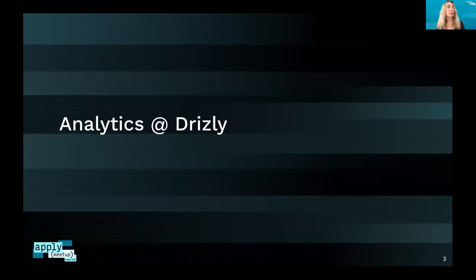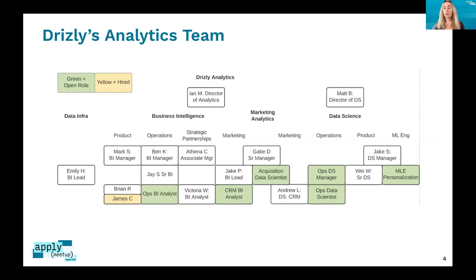Jumping into analytics at Drizzly — this is what our analytics org chart looks like. Under analytics, we have data infra, business intelligence, marketing analytics, and data science. We also work really closely with our data engineering team. They're the ones setting up and standing up all of this infrastructure, though they don't sit underneath the analytics umbrella.